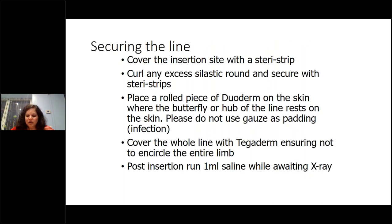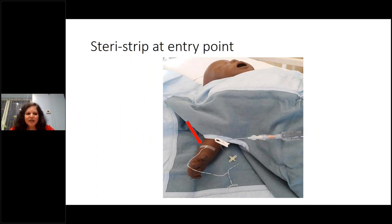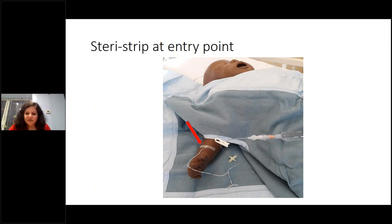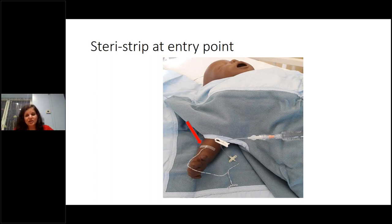When securing the line, place a sturdy strip at the entry point so you can see what's happening — checking for oozing. Stand for five minutes applying moderate pressure to the entry site until it stops bleeding; then begin dressing. If you dress while it's still bleeding, blood collects under the dressing and you risk having to remove everything and losing the line.